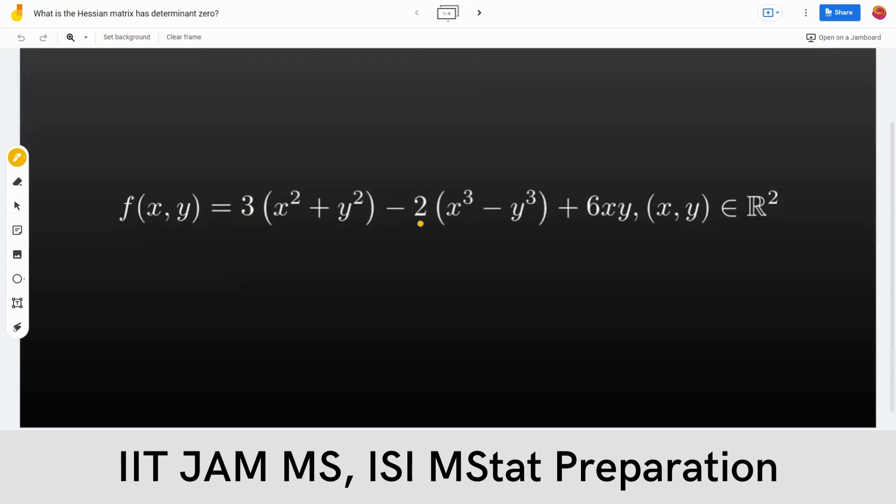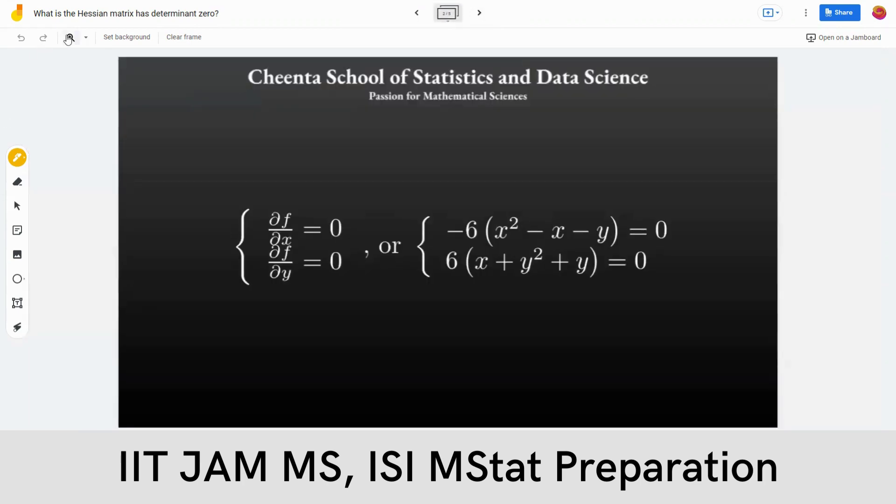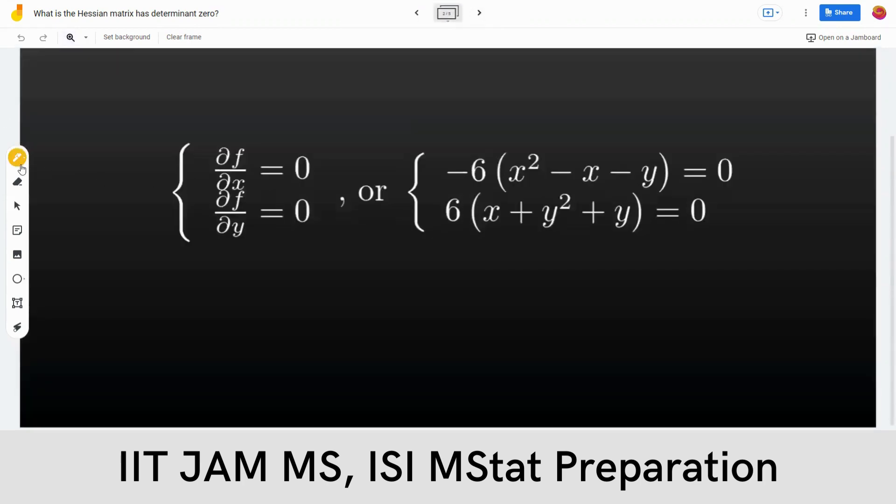So f is a multivariate function which is given like this and the next step is to find the critical points of f. The critical points are defined by the points where the partial derivatives are zero.